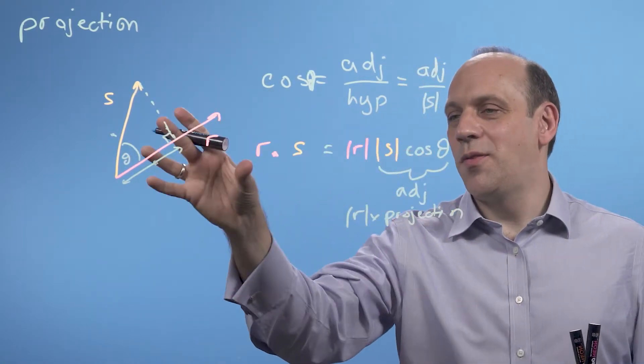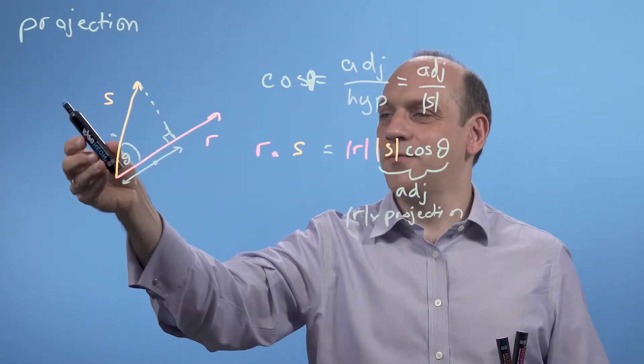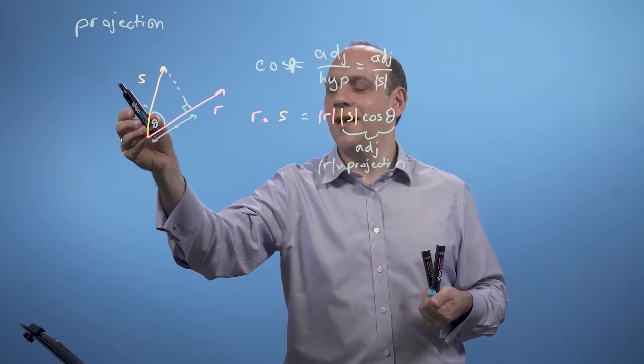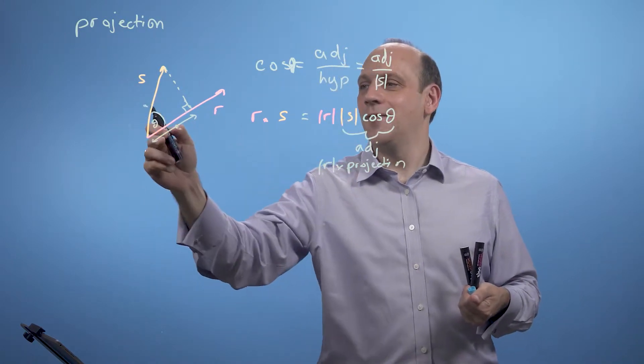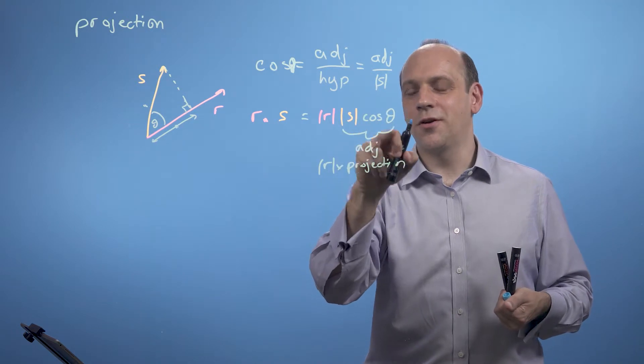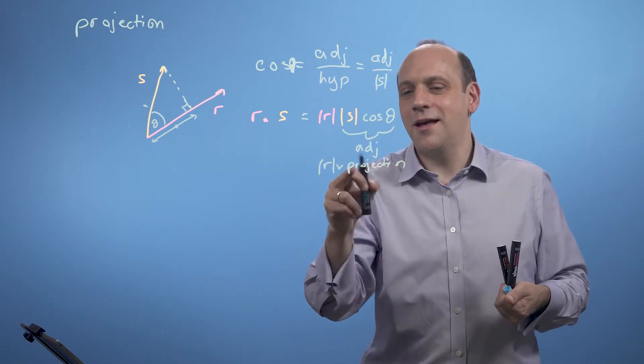And one thing to notice here is that if s was perpendicular to r, if s was pointing this way, it would have no shadow. That is if cos theta was 90 degrees, that shadow would be 0, the cos theta would be 0 here, and I get no projection.